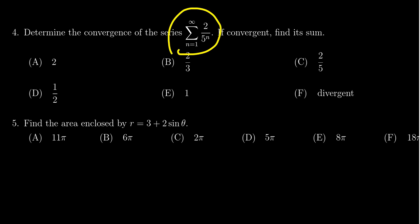Take the sum as n ranges from one to infinity of the terms two over five to the n. We have to determine if this thing is convergent. If it's convergent, we find the sum. And if it's divergent, we would just select divergent.